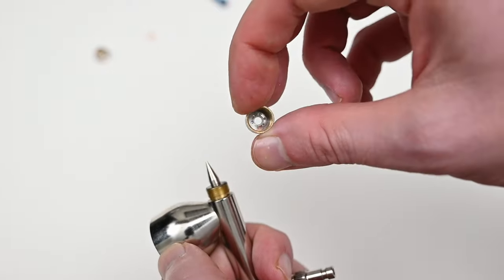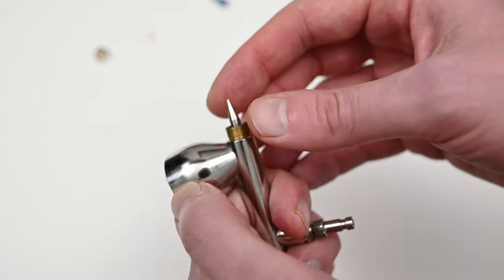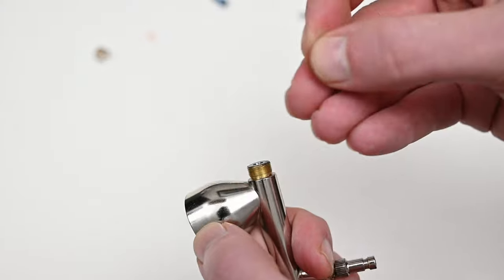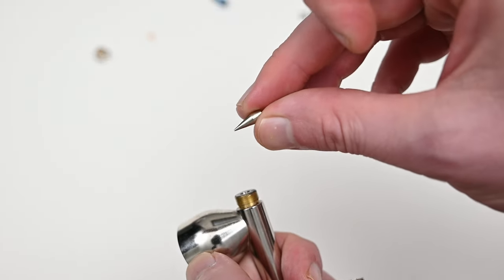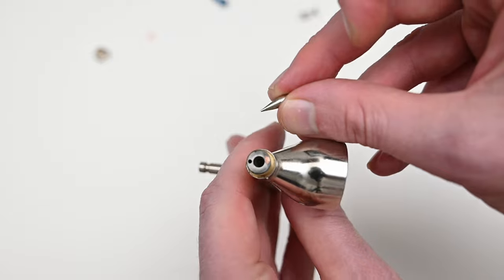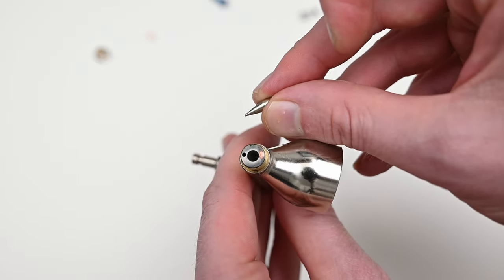I love this nozzle design. It's floating and it's a large piece so it's very easy to swap out and replace when it breaks. This is pretty similar to what you'd see in an Iwata Eclipse and out of all the nozzle designs this is definitely my favorite.